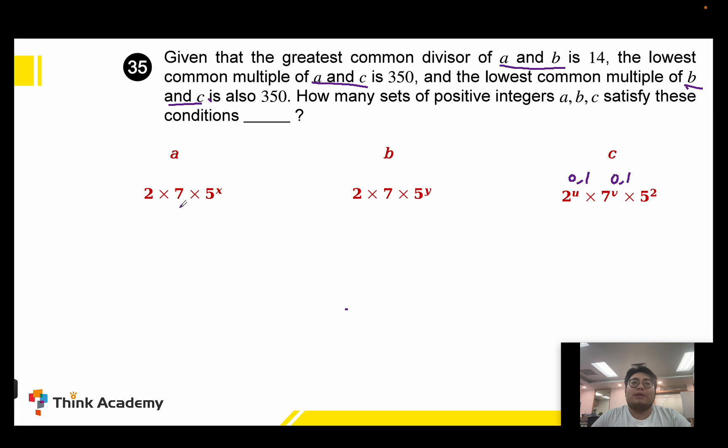Now let's look at how many choices we can define for X and Y. We should keep the GCD, or HCF (highest common factor), as 14, which means at least X or Y must be 0. So if X is 0, then Y can be 0, 1, or 2. If Y is 0, then X can be 0, 1, or 2. In total we have 5 choices.